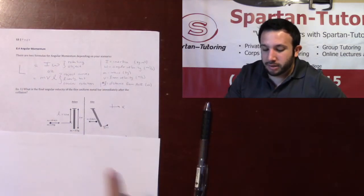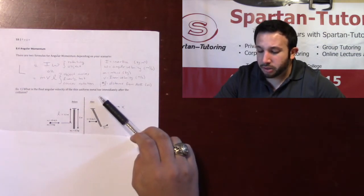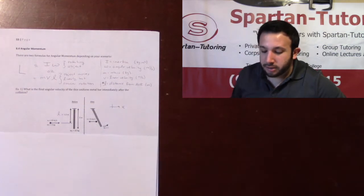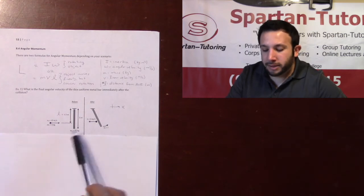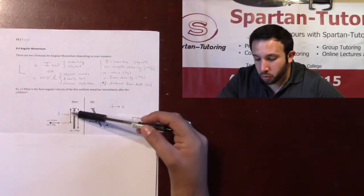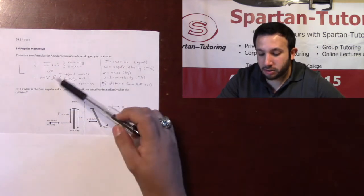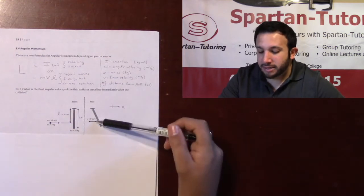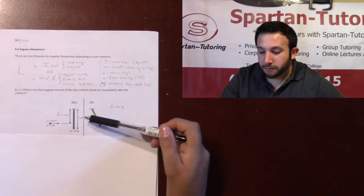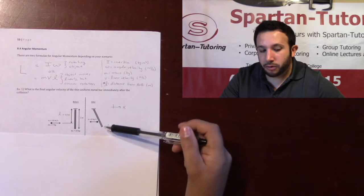If we take a look at number one, it says, what is the final angular velocity of the thin uniform metal bar immediately after the collision? Similarly, this is going on here. I have that V-naught, 10 meters per second. We're going to call M1, that will be that baseball. And it strikes 1.5 meters from the axis of rotation. That is your little L. The length of the rod is 2. The mass of this rod is 10. Then it bounces back with the final velocity of 6 meters per second. And what I'm looking for is omega F.